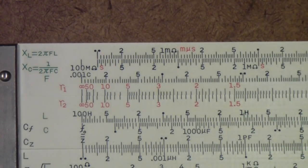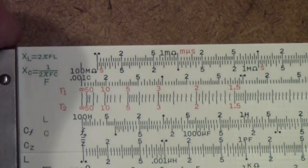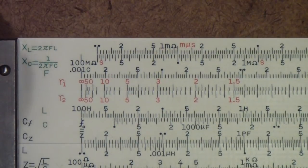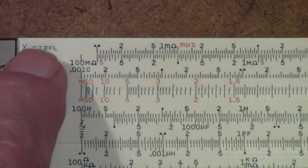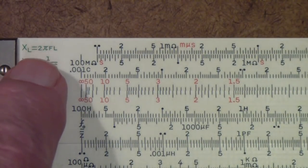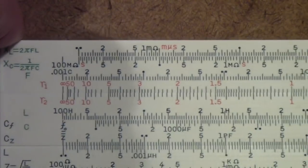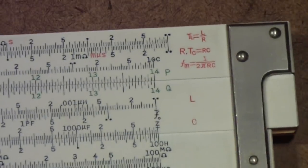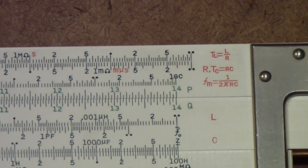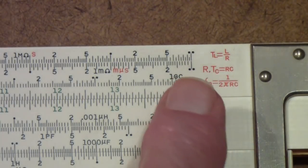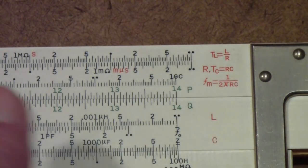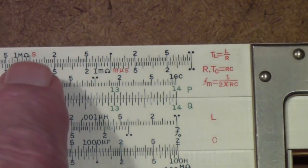But some scales, particularly these top two scales, are used both for time constant and for impedance. Here is the impedance on this end, but the same scale on the other end is for time constant. The difference is if you read time constant you're reading from right to left and you read the red scales.